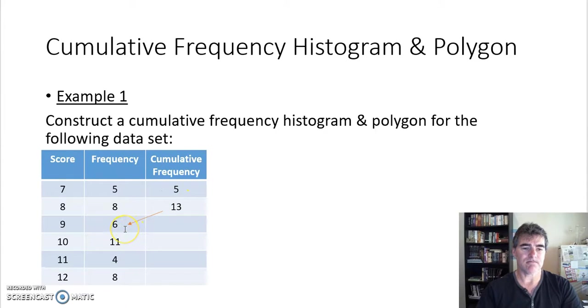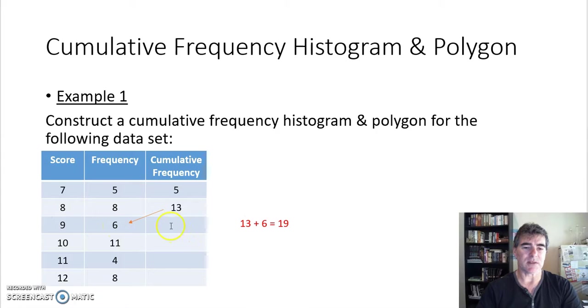I will take my 13 and I'll add on the six because there's six nines, and that will tell me that there's 13 plus six is 19 scores altogether so far. So I'll write that over here, so my cumulative frequency is 19. So again, if I place all the scores in order, the first five are seven, the first 13 are either seven or eight, the first 19 are either seven, eight, or nine.